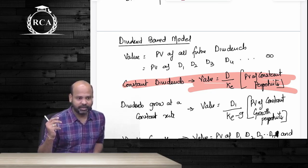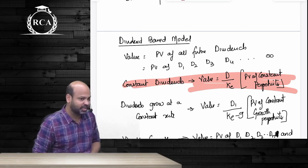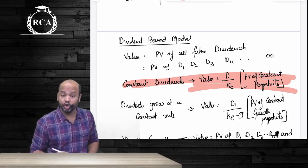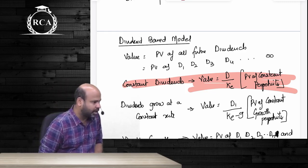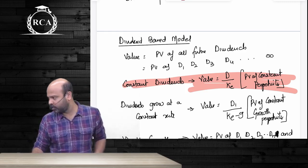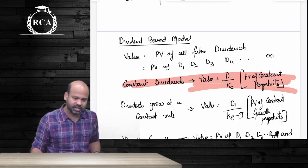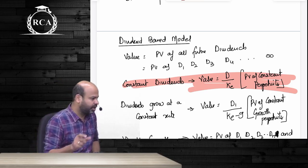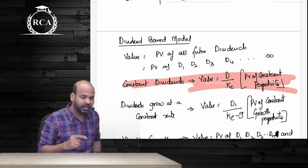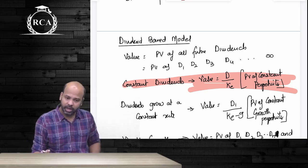The second case is where dividends keep increasing at a constant rate. If dividends are increasing at a constant rate, the value of an equity share equals the present value of a constant growth perpetuity: P0 = D1 divided by (KE minus G). It is very important to identify in DDM questions whether the dividend given is D0 or D1. If they mention 'dividend paid' or 'dividend for the last year,' it is D0; if they say 'dividend for the next year' or 'expected dividend,' then it is D1.